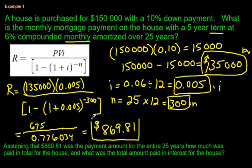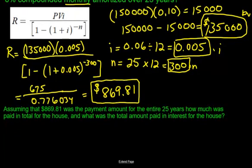869.81. What does this number mean? That is our monthly payment on this mortgage. 869.81. And what else? There's another question here. Assuming that... Oh wow. The answer was right here all along, folks.